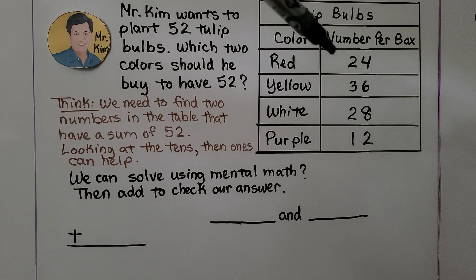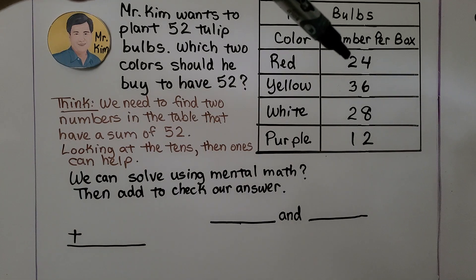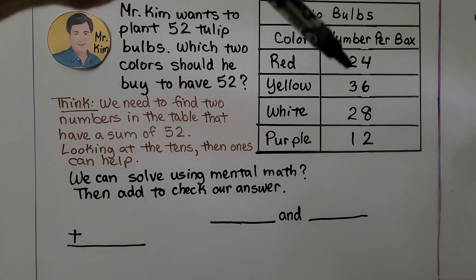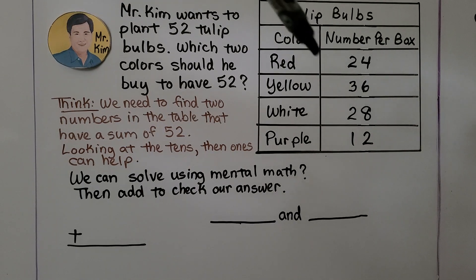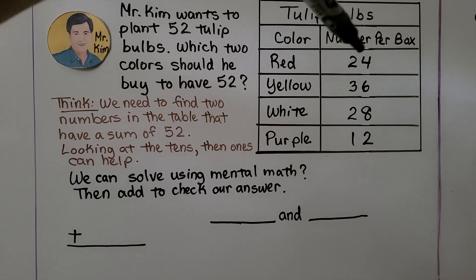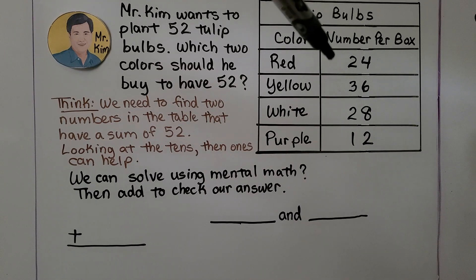We can solve it using mental math. If he buys red and yellow ones, we have two tens plus three tens. That's five tens. He needs 52. We're already at 50. By the time we add the ones, that'll be too many. So it's not red and yellow.